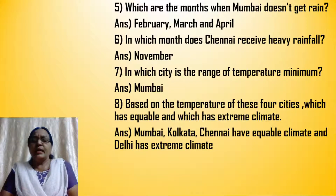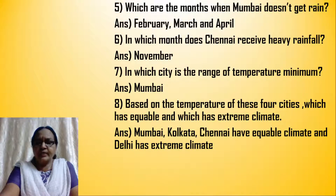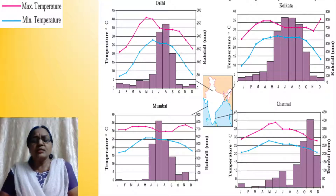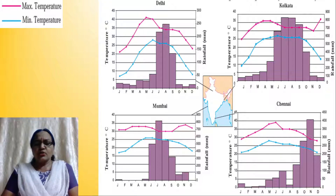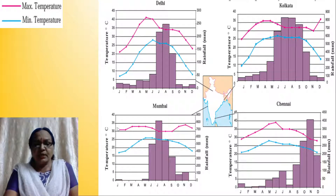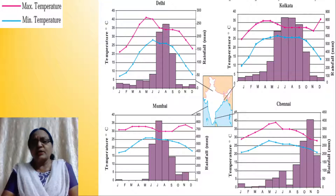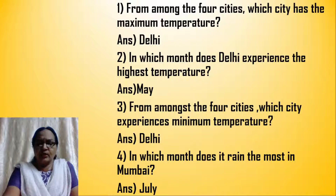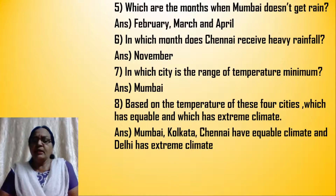In which city is the range of temperature minimum? The range of temperature is the maximum temperature minus the minimum temperature. Looking at Mumbai, the range of temperature is comparatively very low. Delhi has a very high range — about 41 minus 6. Mumbai's range is approximately 31 minus 16, which is comparatively lower than Delhi, Kolkata, and even Chennai. So the range of temperature is minimum in Mumbai city.